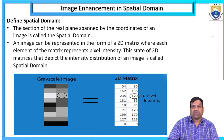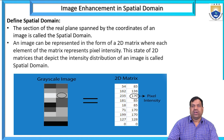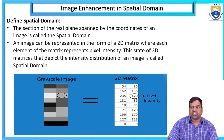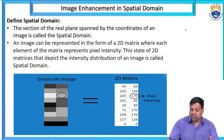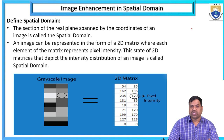What is spatial domain? The spatial domain is nothing but a plane spanned by the coordinates of the image. An image can be represented in the form of a 2D matrix where each element of the matrix represents pixel intensity. This state of 2D matrices that depict the intensity distribution of an image is called a spatial domain. Spatial domain plays a very important role in image enhancement.